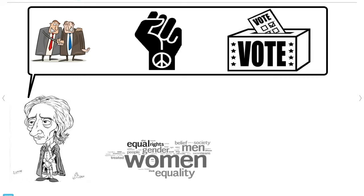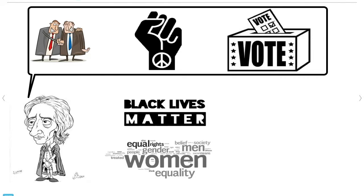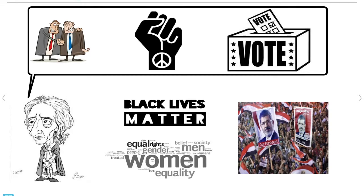Not much has changed in Locke's theory and its implementation in modern society. The majority of society still believes in equal rights and tries to ensure these rights for all. For example, the Black Lives Matter campaign is an effort to treat people the same despite the color of their skin. We also see political rebellions occurring, like the one in Egypt a few years ago with the overthrowing of Muhammad Morsi, the Egyptian president.